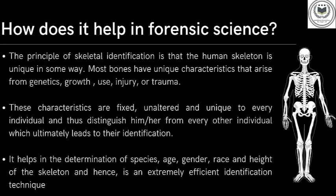How does it help in Forensic Science? The principle of skeletal identification is that the human skeleton is unique in some way. Most wounds have unique characteristics that arise from genetics, growth, use, injury or trauma. These characteristics are fixed and unaltered and very unique to every individual, and thus help in distinguishing them from every other individual, ultimately leading to identification.